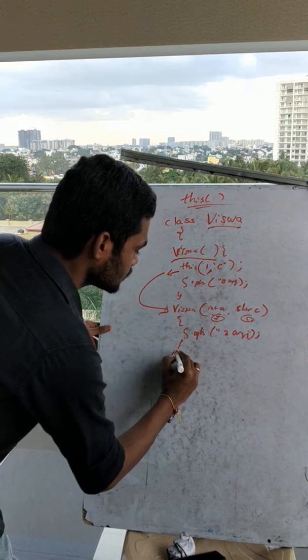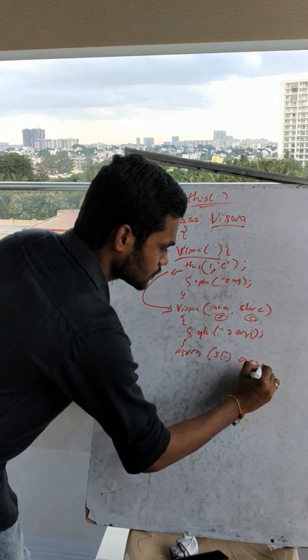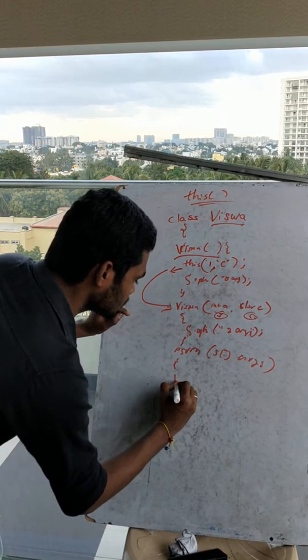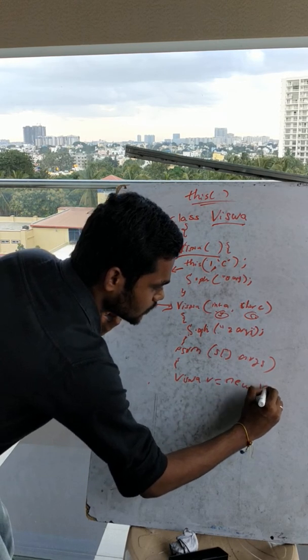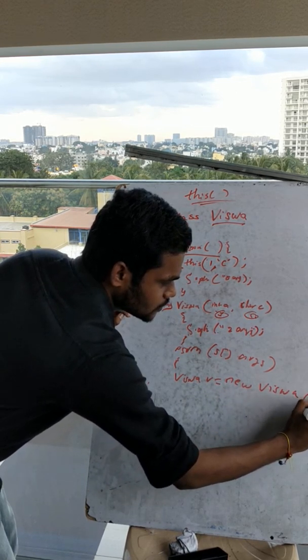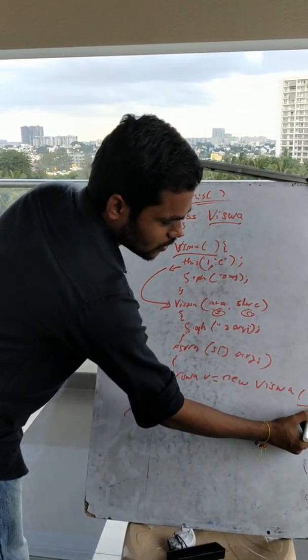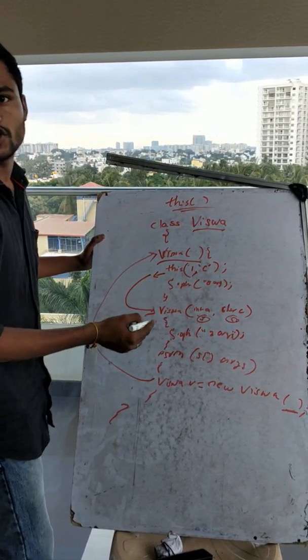There are three types of constructors: zero argument, one argument, and multiple argument constructors. Here there is zero argument, so you will go to the zero argument constructor.